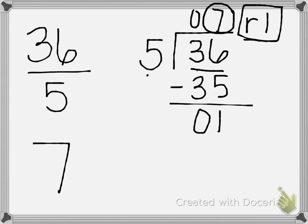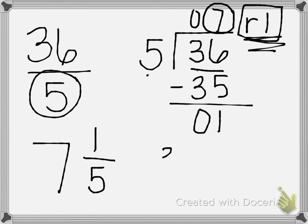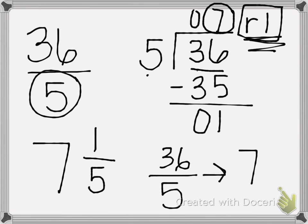Your remainder of 1 is going to be your new numerator in your mixed number, so you now have 1 as your numerator. Your denominator is going to stay the same as it was in your original fraction greater than 1, which was 5. So 36 fifths becomes 7 and 1 fifth.